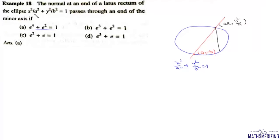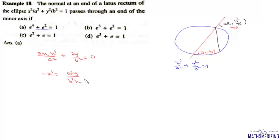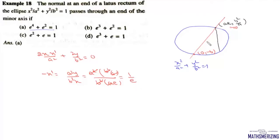We know that at this point we can find the slope of the normal. Differentiating the ellipse equation, we get 2x·(dx)/a² + 2y/b² = 0, so the slope of the normal is a²y / b²x. Here y = b²/a and x = ae, so it becomes a²·(b²/a) / (b²·ae). The a's and b²'s cancel, giving slope of normal = 1/e.